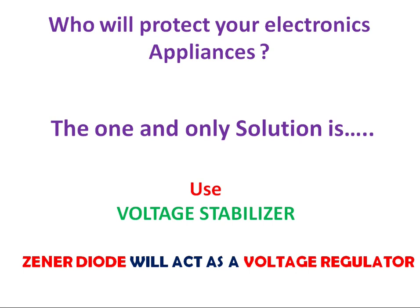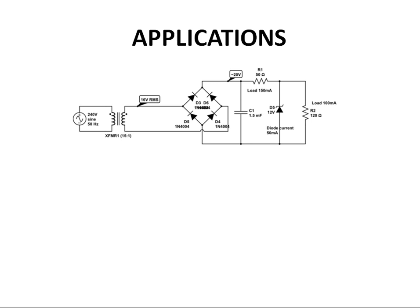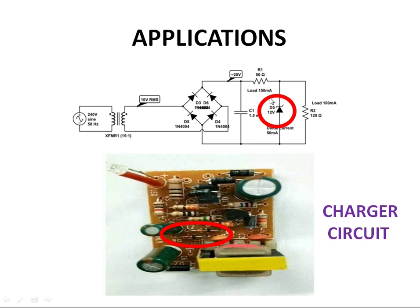These are some of the applications of Zener Diode. This is a simple 12 volt charging circuit. Here Zener Diode is used as a voltage regulator. Irrespective of the input voltage, your output voltage is constant. The input voltage may go up to 14 volts, but still your output voltage is 12 volts.